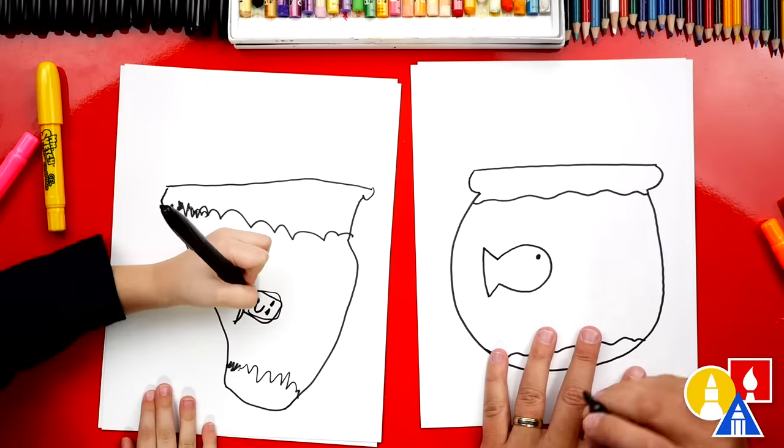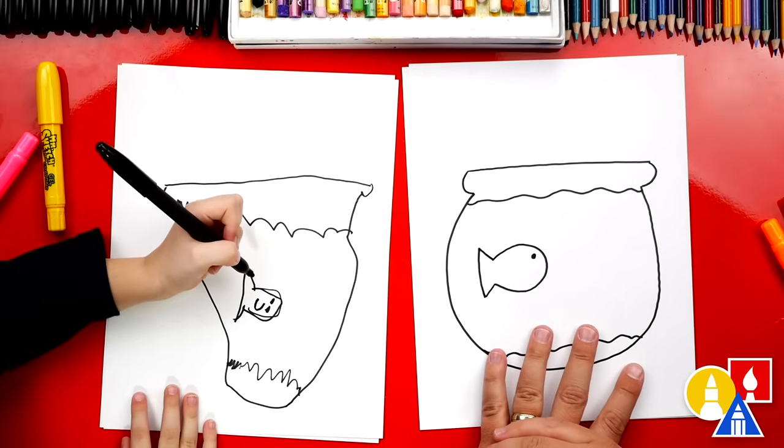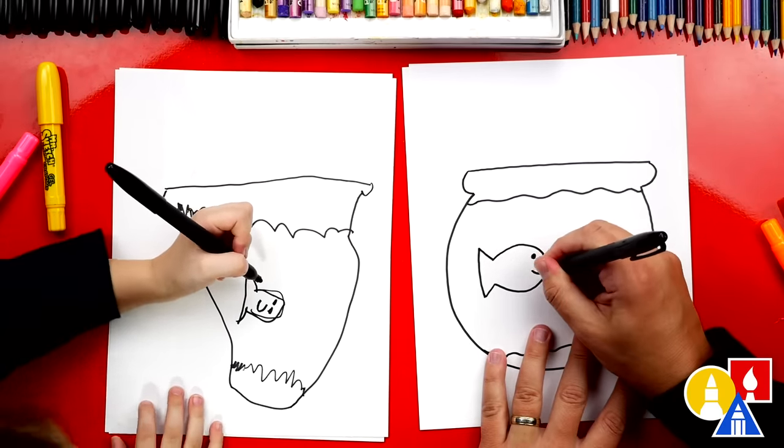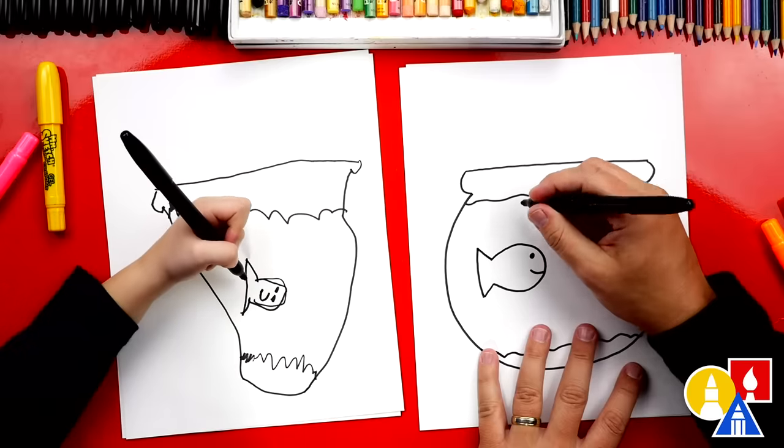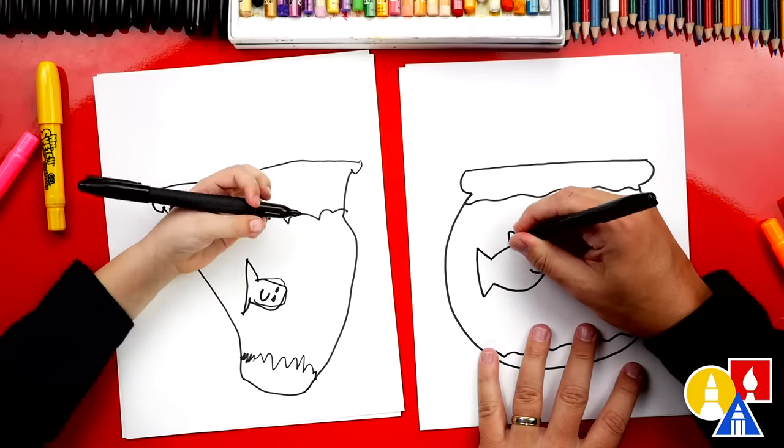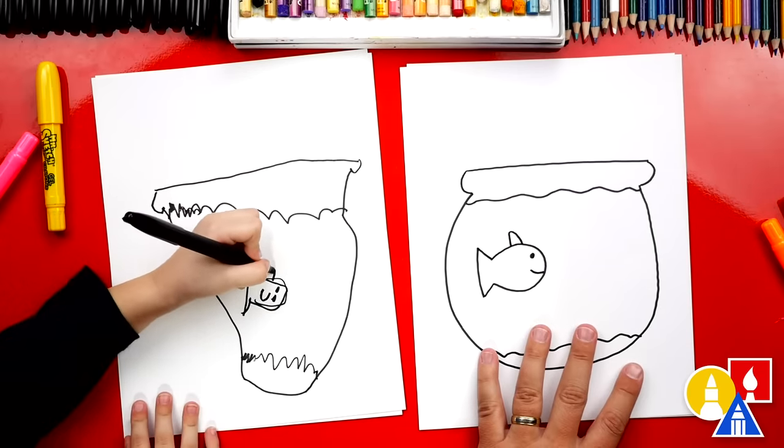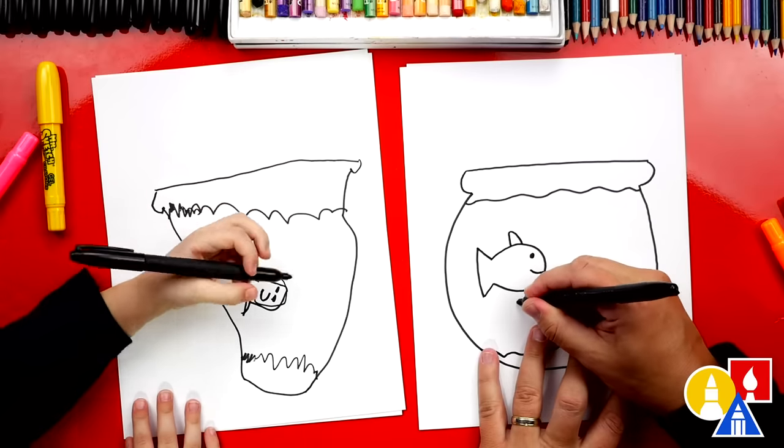And we could also draw the little eye for our fish. Oh, two eyes and a smile. I like that a lot. I'm gonna draw a little smile like this. Oh, let's draw a fin on the top. We'll go up and down. So it can swim. And let's draw a fin on the bottom too.